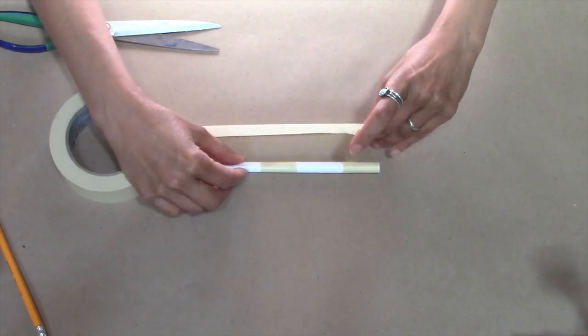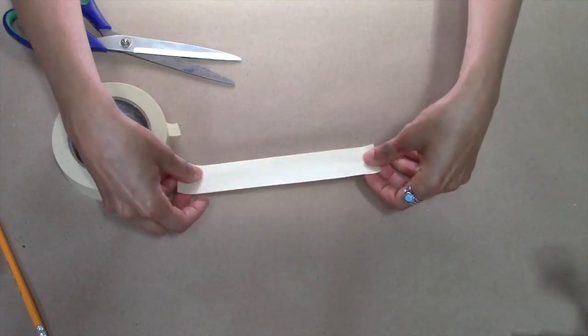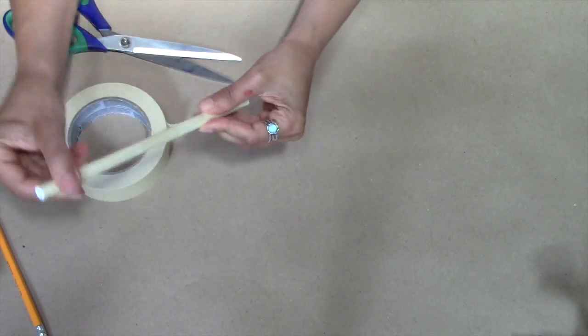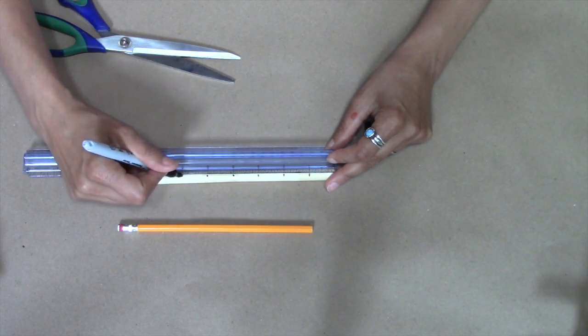Next, apply a piece of tape across the seam along the entire length of the tube. Then mark and cut the tube into half inch pieces.